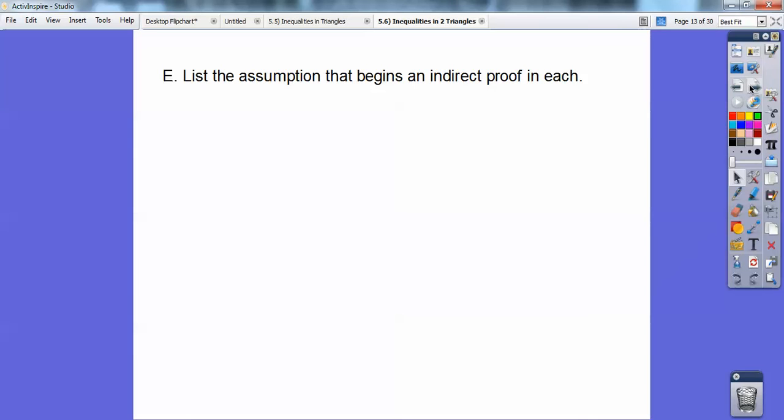Here's some given statements and some prove statements. List the assumption that begins your indirect proof in each. Given X is an odd number, prove that X is not divisible by 4. We always start with the opposite of our prove statement. If this says X is not divisible by 4, so the opposite would be to assume X is divisible by 4. That's your answer. That's what they're asking for.